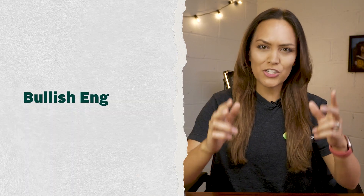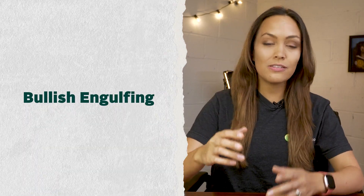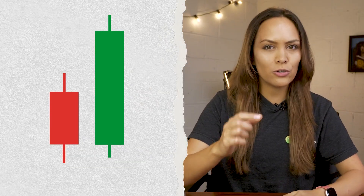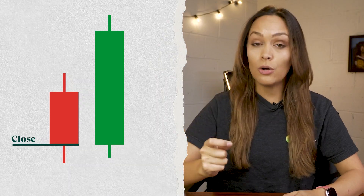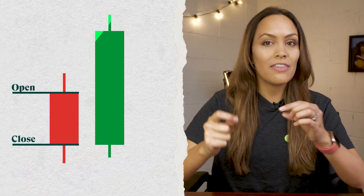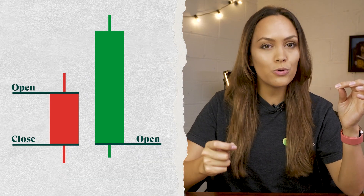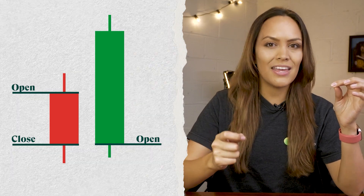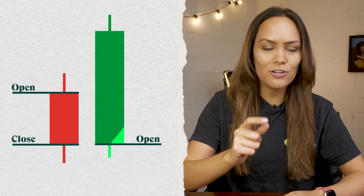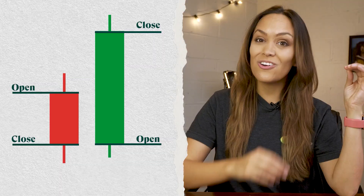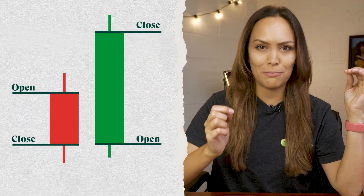For example, the bullish engulfing pattern is a smaller red-bodied candle engulfed by a following larger green-bodied candle. In this pattern, the first candle closed at a price lower than its open price, and the next candle then opens around the previous candle's close, but then, with enough eager buyers, closes higher than the previous candle's opening price.